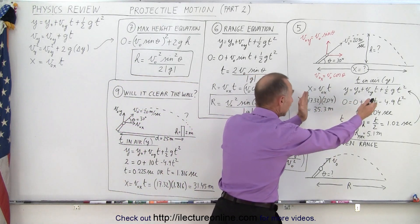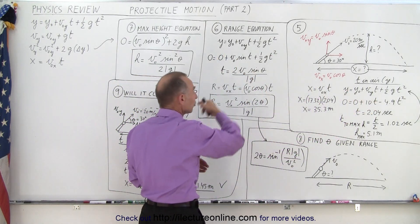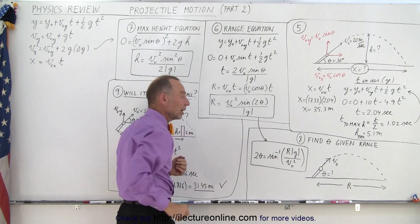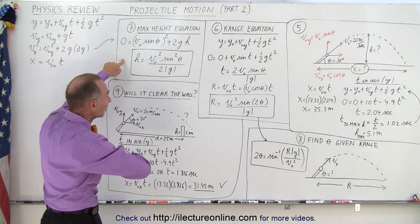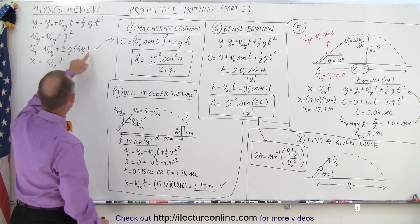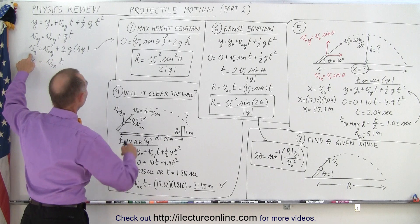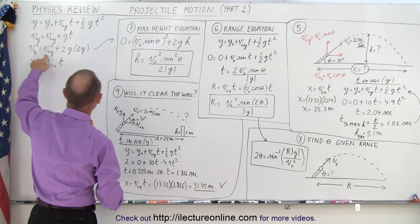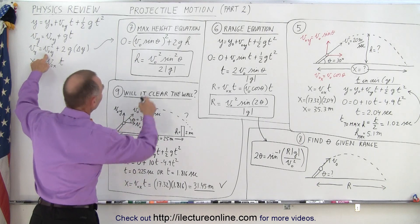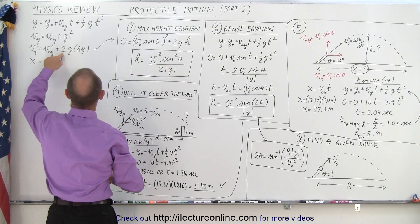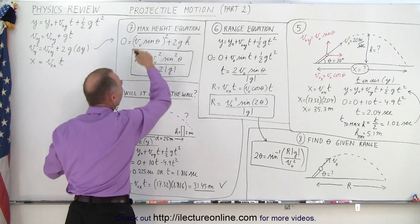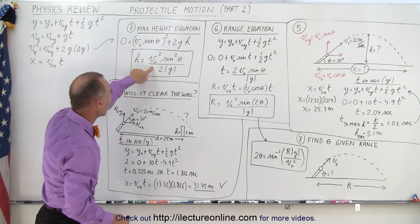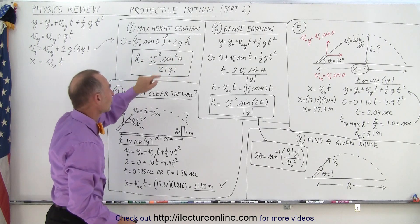This gives the general equation for the range of projectile motion. All you have to do is plug in the initial velocity, the sine of twice the angle, divided by g, and you get the range. For the maximum height, we use the third kinematic equation: the final velocity in the y-direction must be zero at maximum height. Initial velocity in y is v-initial times sine of theta, squared, plus 2g times the change in height. Solving for h gives the general equation for maximum height: v-initial squared times sine-squared of theta, divided by twice g.